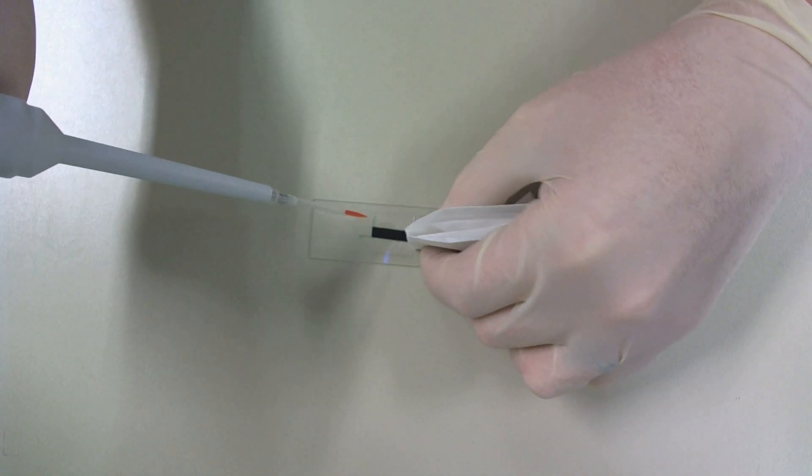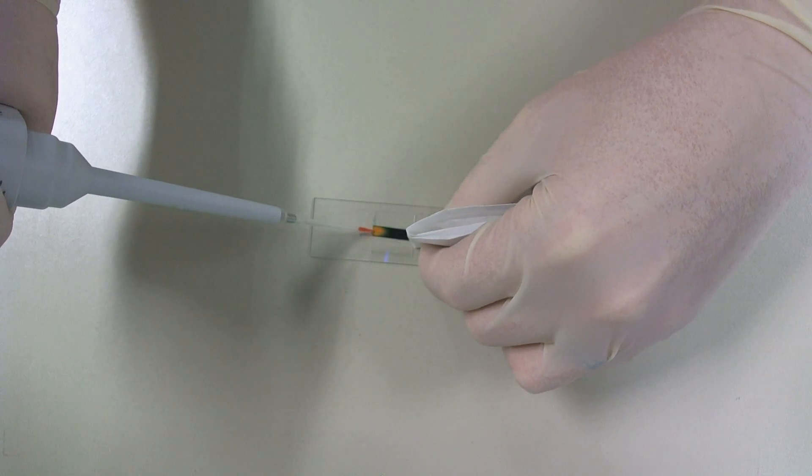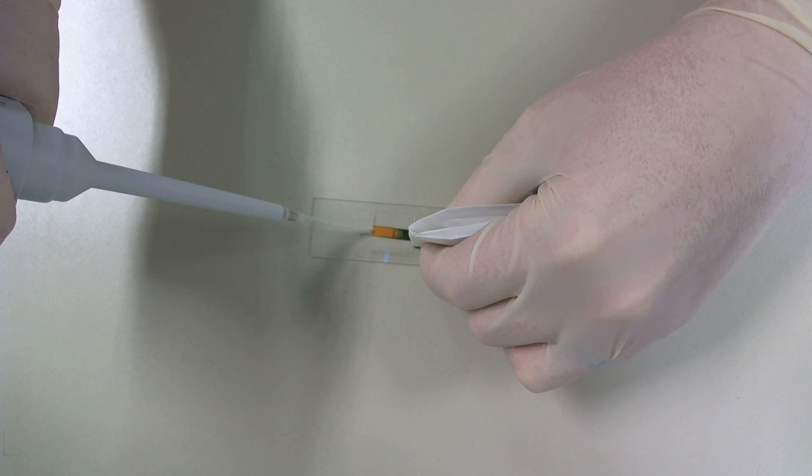I initially added 10 microliters of blue food coloring, and then added the same 10 microliters of yellow food coloring. As you can see, not all the blue food coloring has been replaced by the yellow food coloring.